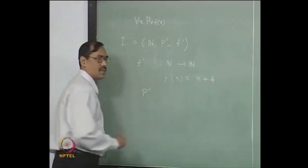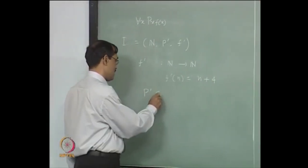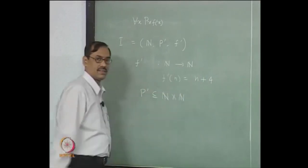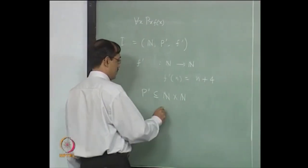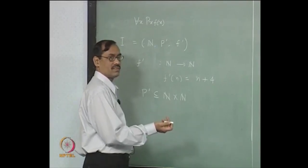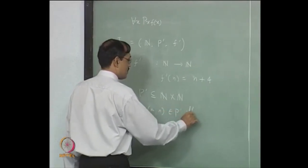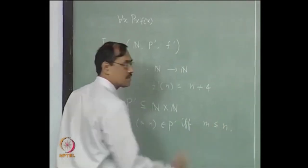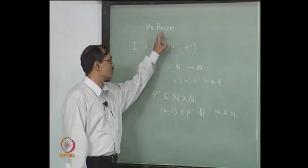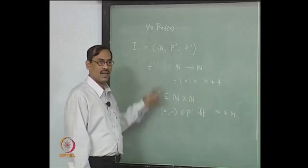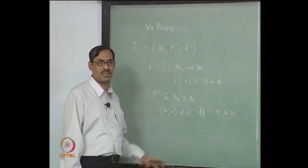Now what is p prime? p prime has to be a binary relation on the natural numbers — a subset of N × N. Let us take p prime to be ≤, meaning (m, n) belongs to p prime if and only if m ≤ n. So formally, phi(f) is n+4 and phi(p) is ≤.